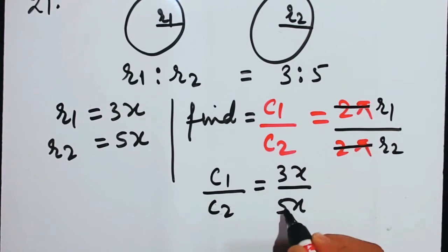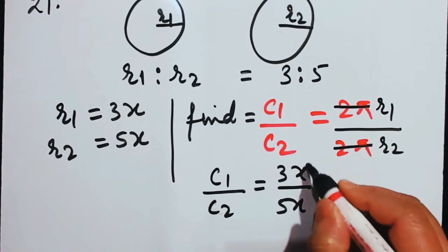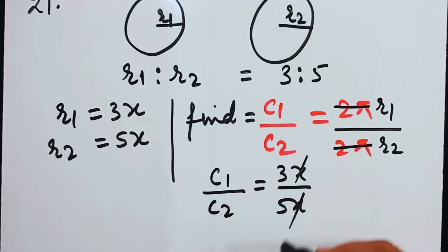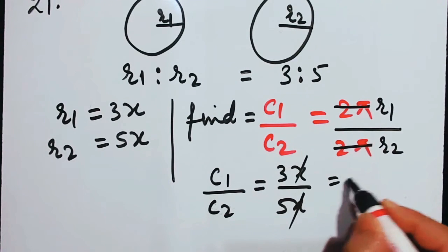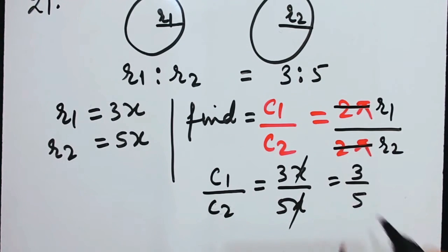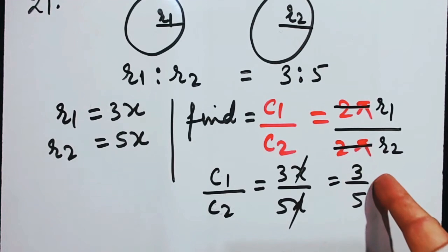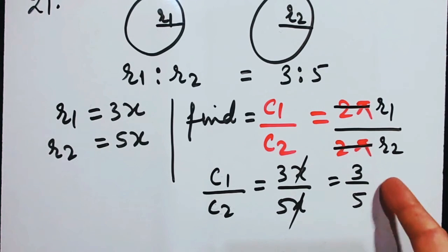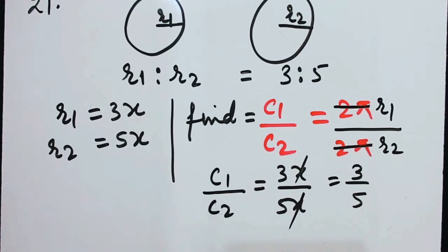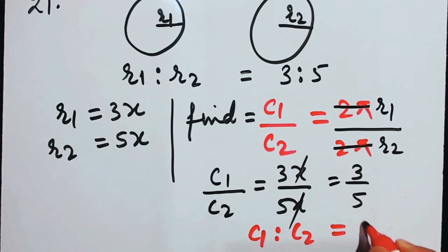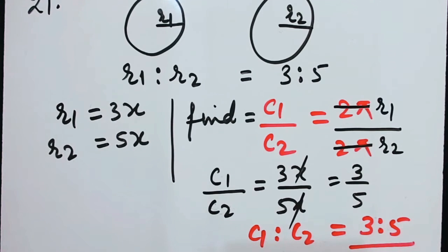On cancellation of x, you get 3 by 5. But this is not the final answer — they asked for the ratio, so the answer is C1 is to C2 equals 3 is to 5.